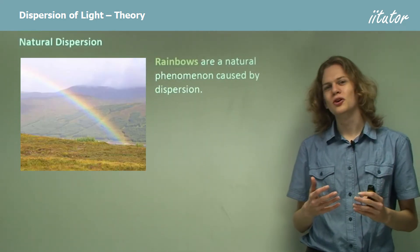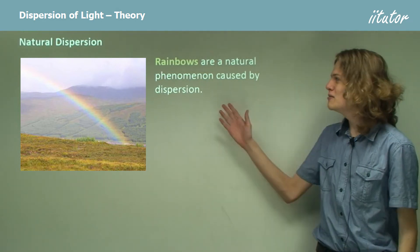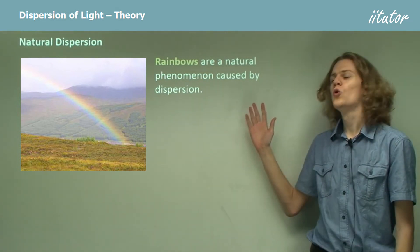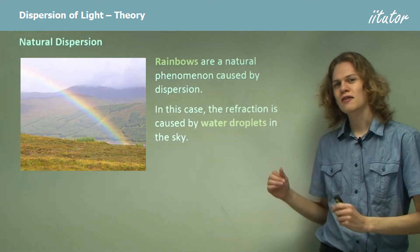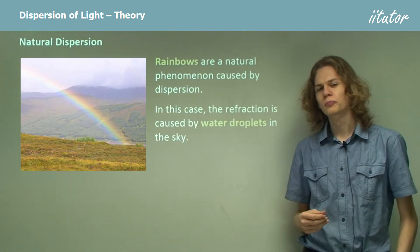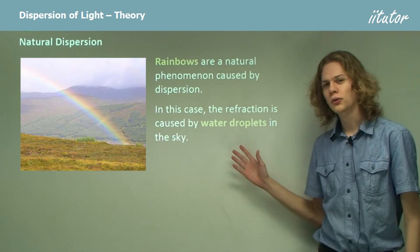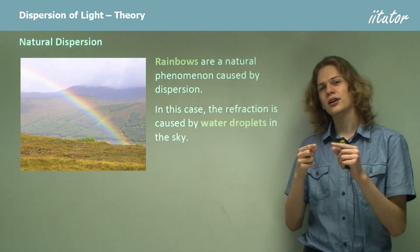Another way that we can observe dispersion in real life is in rainbows. Rainbows are phenomenon caused by the dispersion of light through water. In this case, we don't have a big pool of water or a prism of water. We have water droplets in the sky, each one of which behaves like a tiny prism.